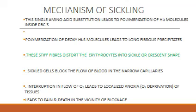These stiff fibers distort the shape of the erythrocytes into a sickle or crescent shape. These sickle cells, which are distorted RBCs, block the flow of blood in the narrow capillaries, and interruption in the flow of oxygen leads to localized anoxia — oxygen deprivation of the tissues — which can lead to pain and death in the vicinity of the blockage.